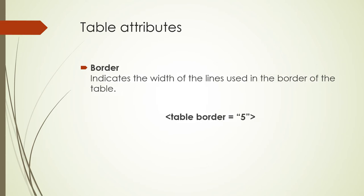The next table attribute is border. If we do not add a border to our table, there will be no lines around it. This indicates the width of the lines used — the bigger the number, the greater the width of the outside border.